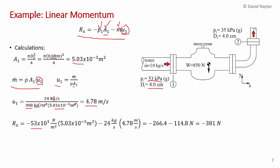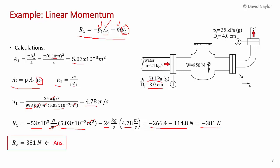Substituting: Rx = −(53 × 10³ N/m²)(5.03 × 10⁻³ m²) − (24 kg/s)(4.78 m/s). The units yield newtons. The result is negative, confirming Rx acts in the negative x direction. This can also be expressed as +381 N with an arrow pointing left.